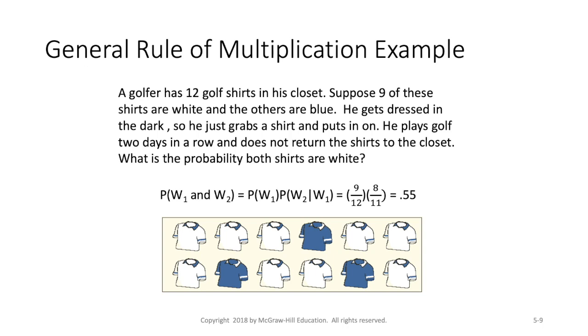Well there's 12 total shirts in the closet, right? We're told up here, 12 shirts and nine of these are white. So the probability is nine over 12. And then we're going to multiply this times the probability of what's going to happen on day two. Well, we're assuming this is asking for what's the probability that both shirts are white. So we're assuming that day one, he selected white. Now what's the probability that he'll again select white on day two?